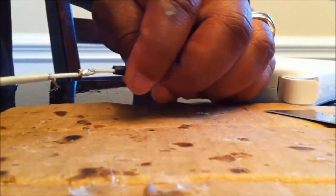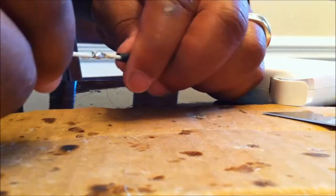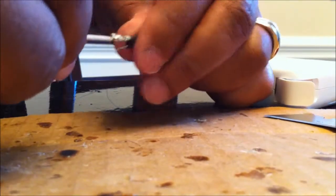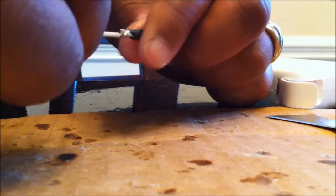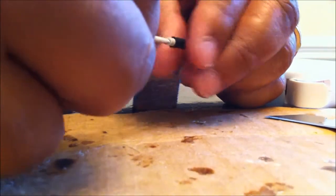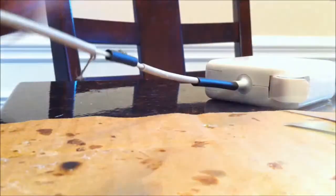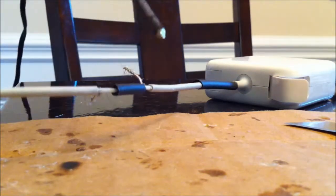I'm going to go ahead and pull the heat shrink tube over that joint. And once that's in the area that I want it to be, we'll heat it up. You can either use a heat gun, cigarette lighter, or as I'm doing here, you can use the heat from the soldering iron itself.